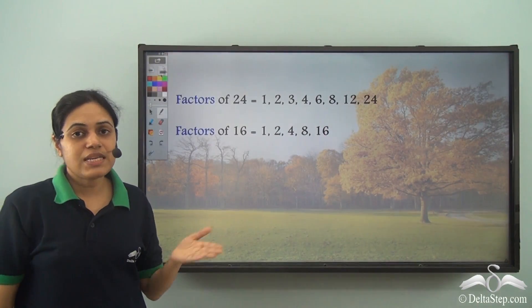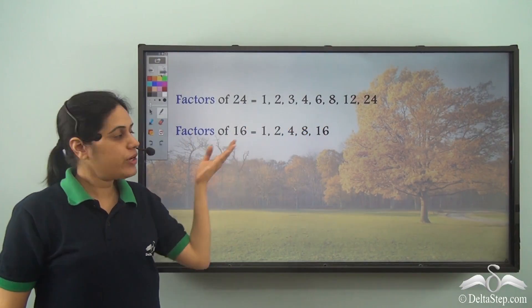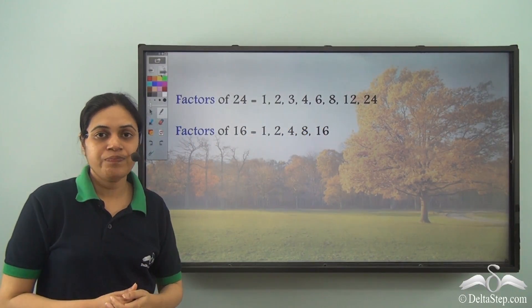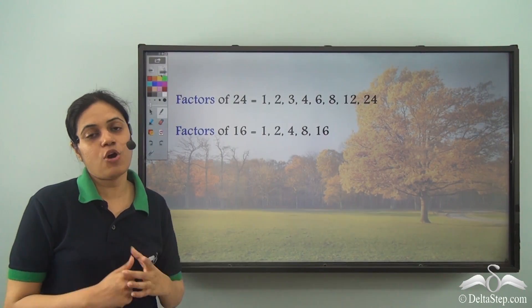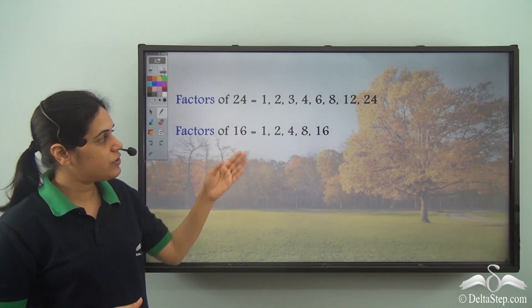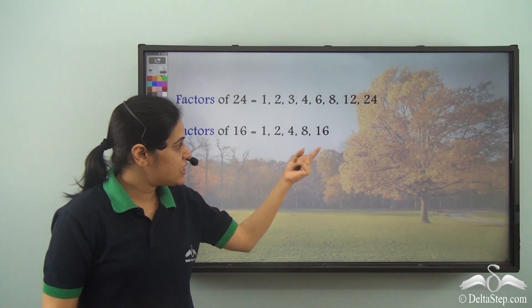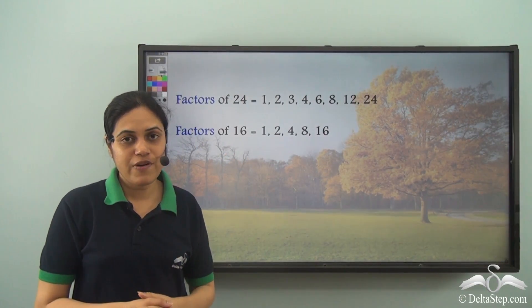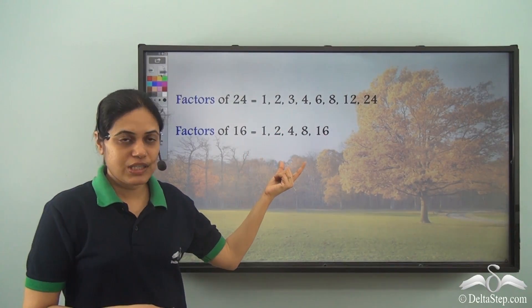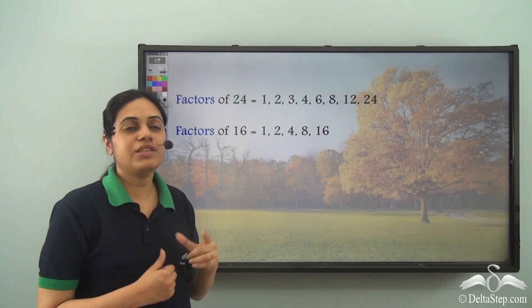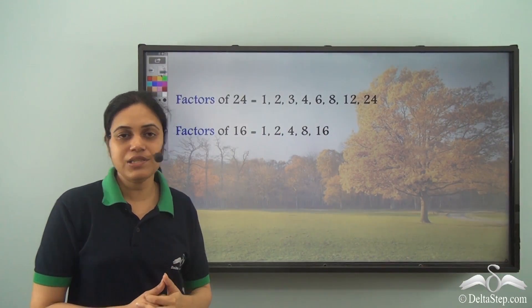First, I need to write all the factors of 24 and all the factors of 16. Then I need to write the full list of common factors of these two numbers. Since 16 has fewer factors, I compare the factors of 16 with the factors of 24 to find what they share.